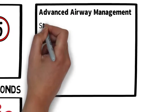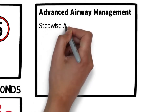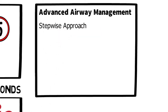Moving on to advanced airway management, some key principles include a stepwise approach. We're going to start simple, looking at manoeuvres like a head tilt chin lift or a jaw thrust depending on the situation, moving on to an OPA, then considering an NPA, i-gel, or endotracheal intubation where appropriate.